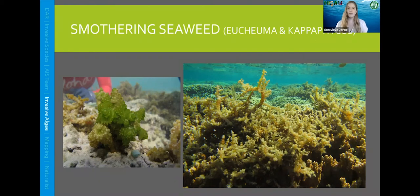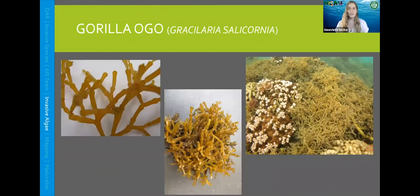An interesting thing about smothering seaweed is that it's only found on Oahu's windward coast. By containing this algae in the area where it exists, we're hoping to decrease the likelihood that it will spread to other parts of Oahu. The second algae we target is Gorilla Ogo. You can see it also creates mats that overgrow coral. It typically has an orange-y color, sometimes somewhat brown, and its most identifying feature is constricted nodules at the tips of each branch. It's found on Oahu, Molokai, and Big Island.